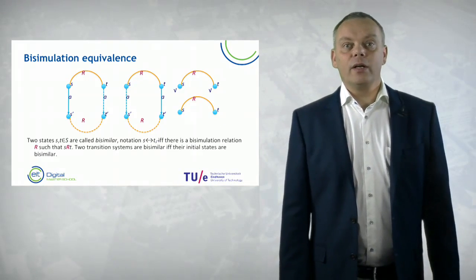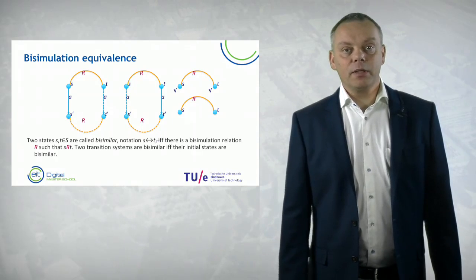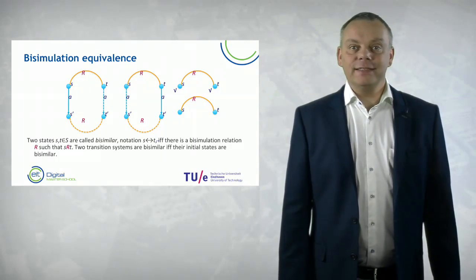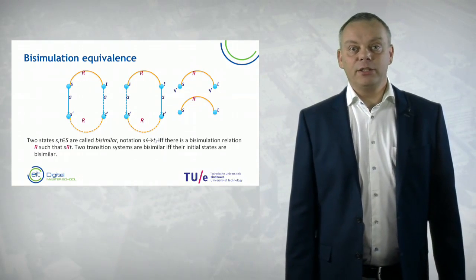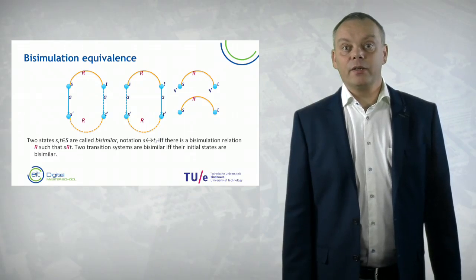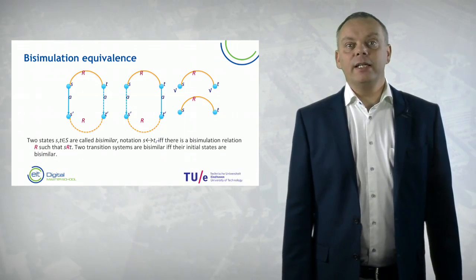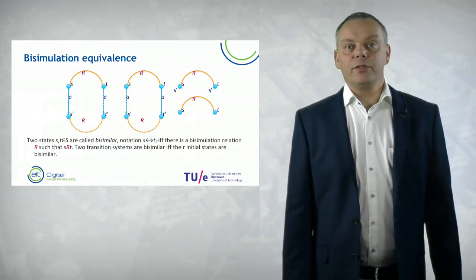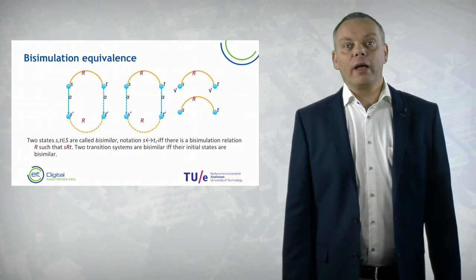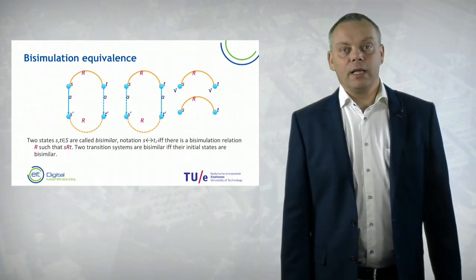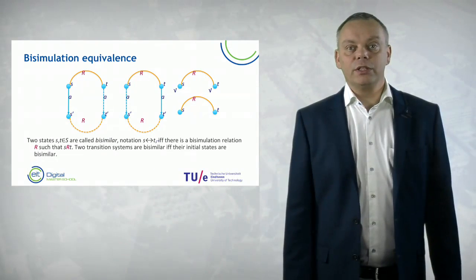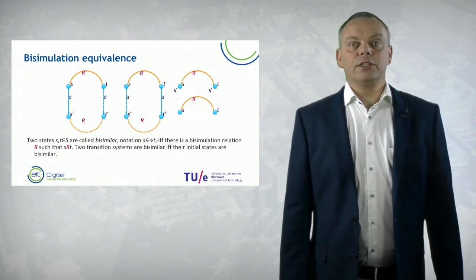When are two states bisimilar? If we have two states S and T and we can find a bisimulation relation R that relates them, then we say that these two states are bisimilar. We use a typical notation for that with a double arrow that is underlined. If you have two transition systems, we say they are related if the initial states are related.